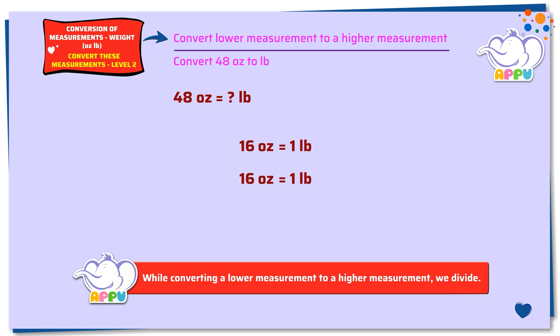So to find 48 ounces, we multiply both sides by 3. 3 times 16 ounces equals 3 times 1 pound. 3 times 16 ounces equals 48 ounces.